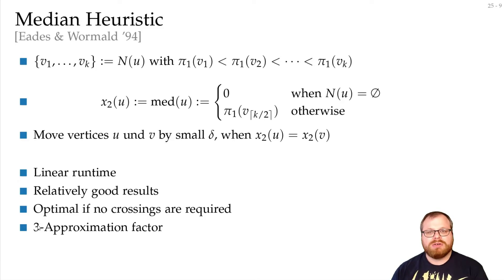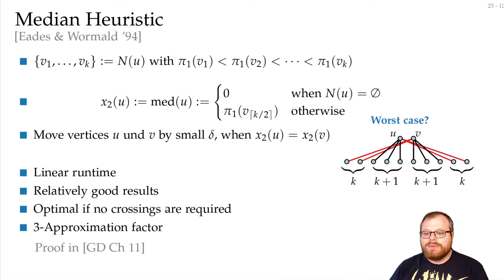I won't prove that we get the 3, but I'll show you the worst case. Look at this example. We have two vertices at the top, and v is connected to the first k, then u to the next k+1, then v to the next k+1, then u to the last k. Since this is one more than this, and this is one more than this, we will have the order u and v. But that means all these red edges cross each other, and the red edges here cross the black. So we have 2k times k+1 plus k squared.